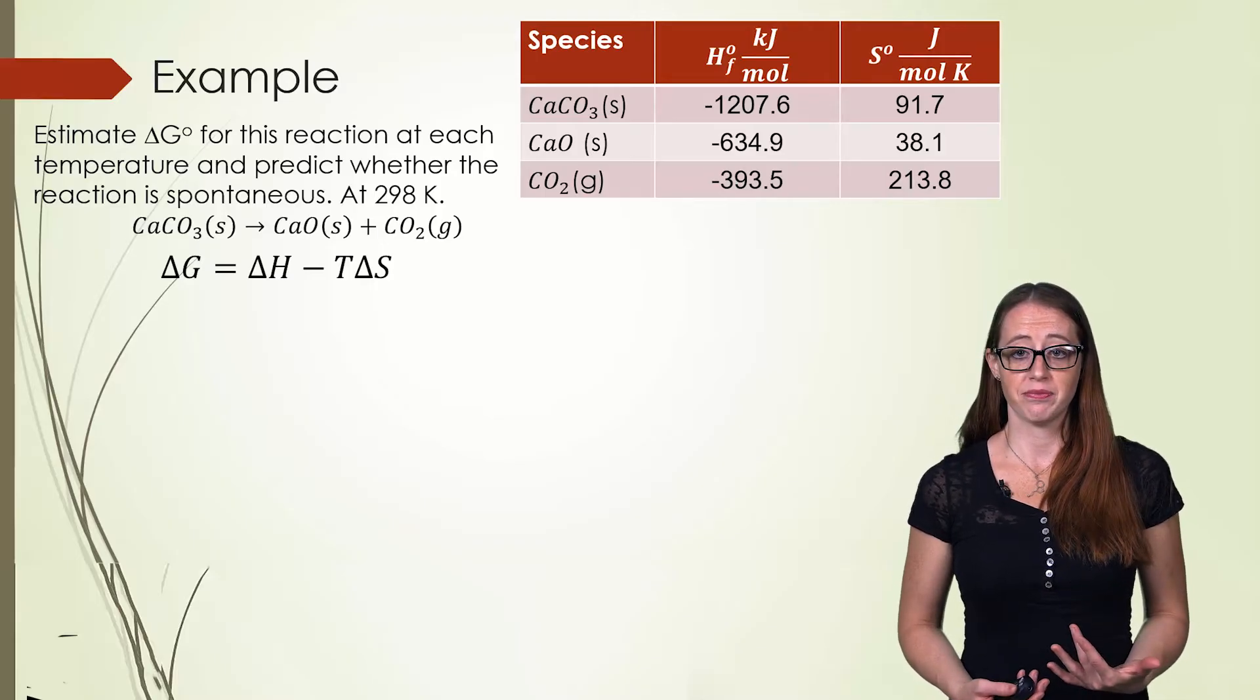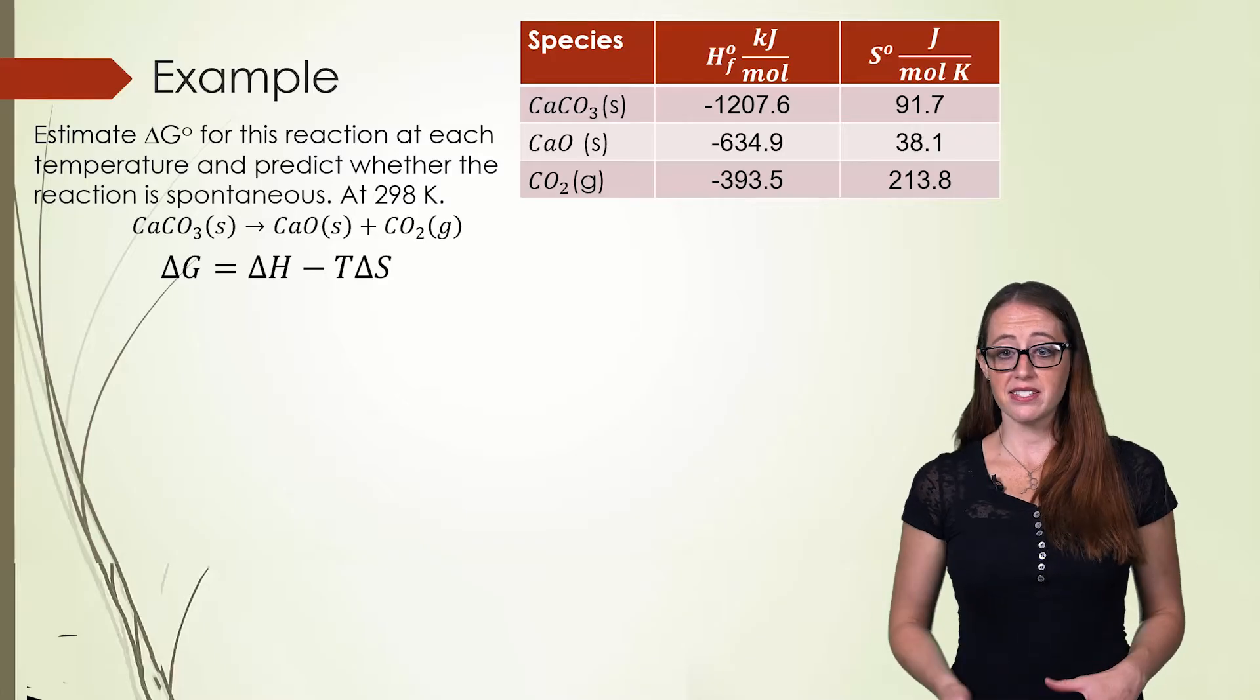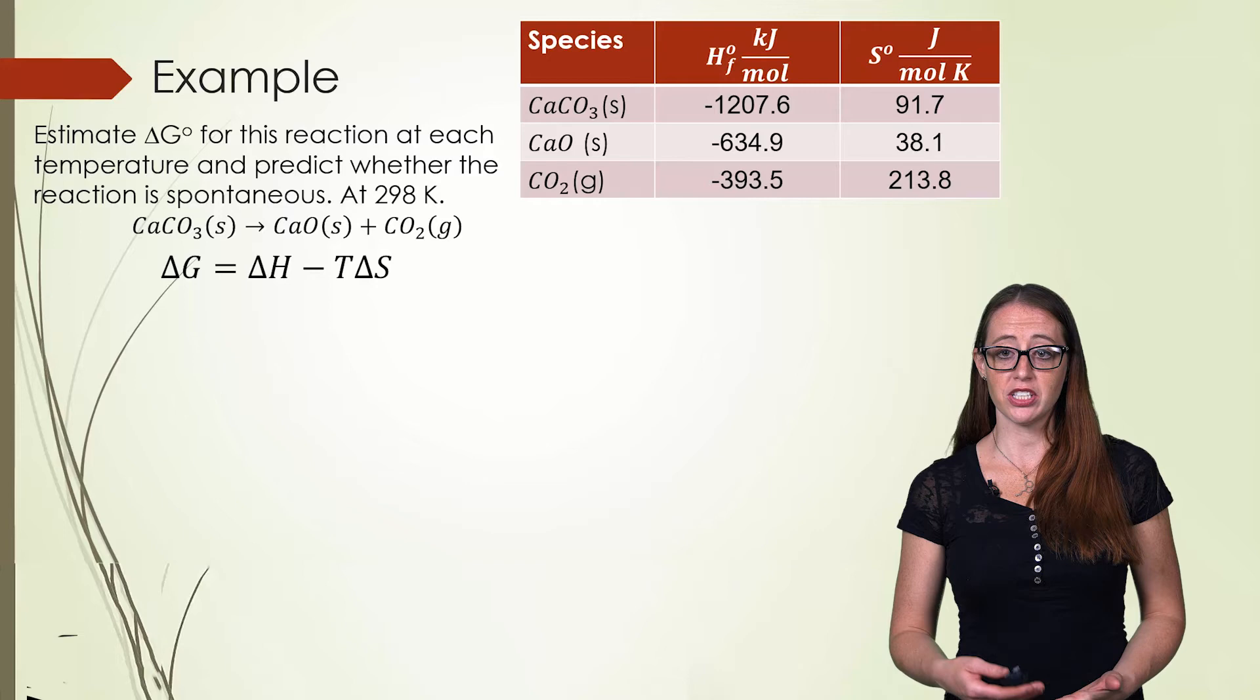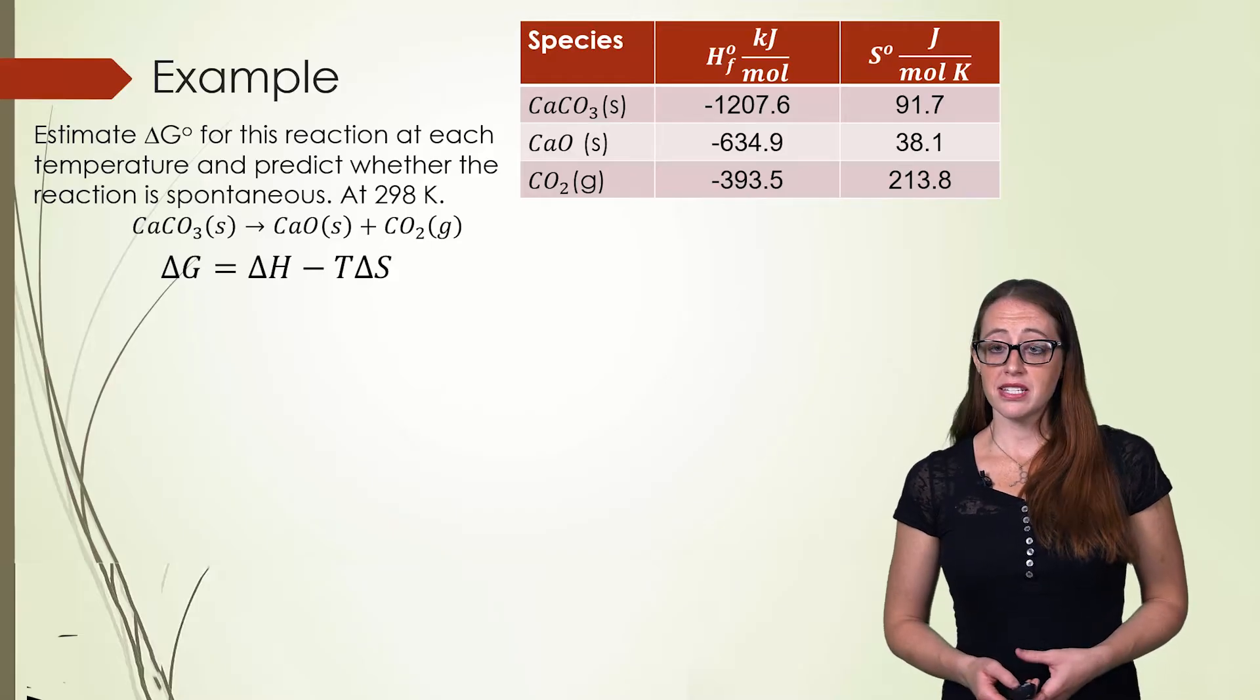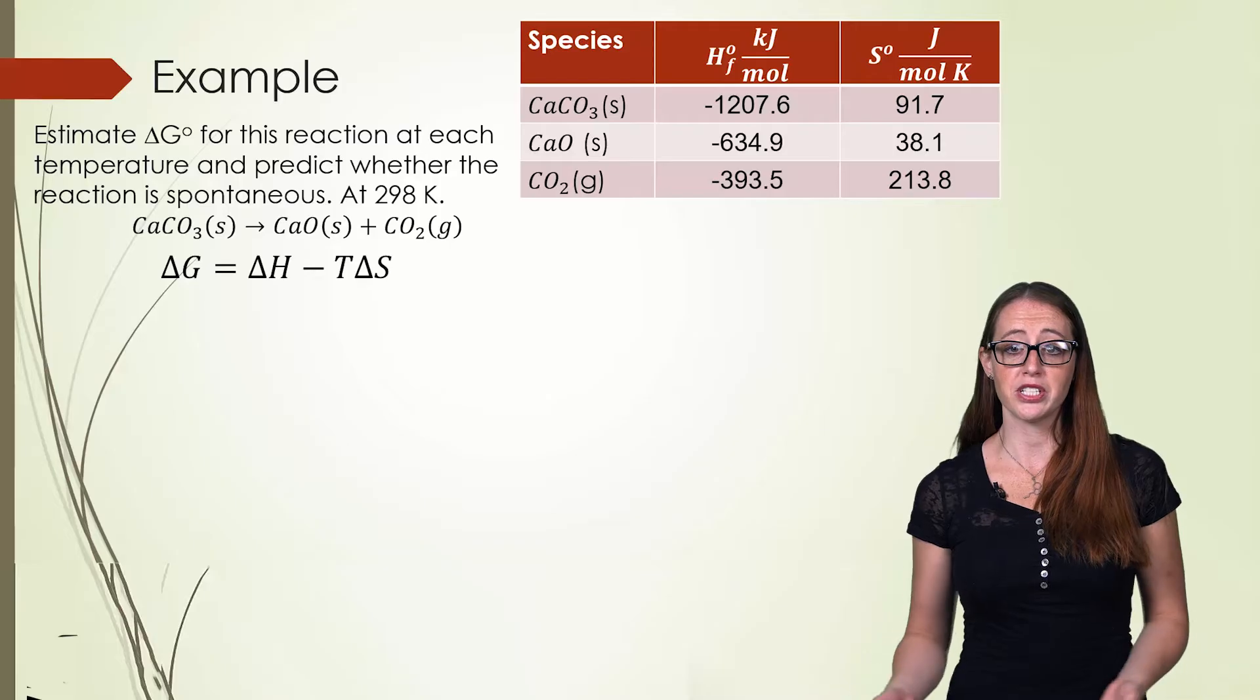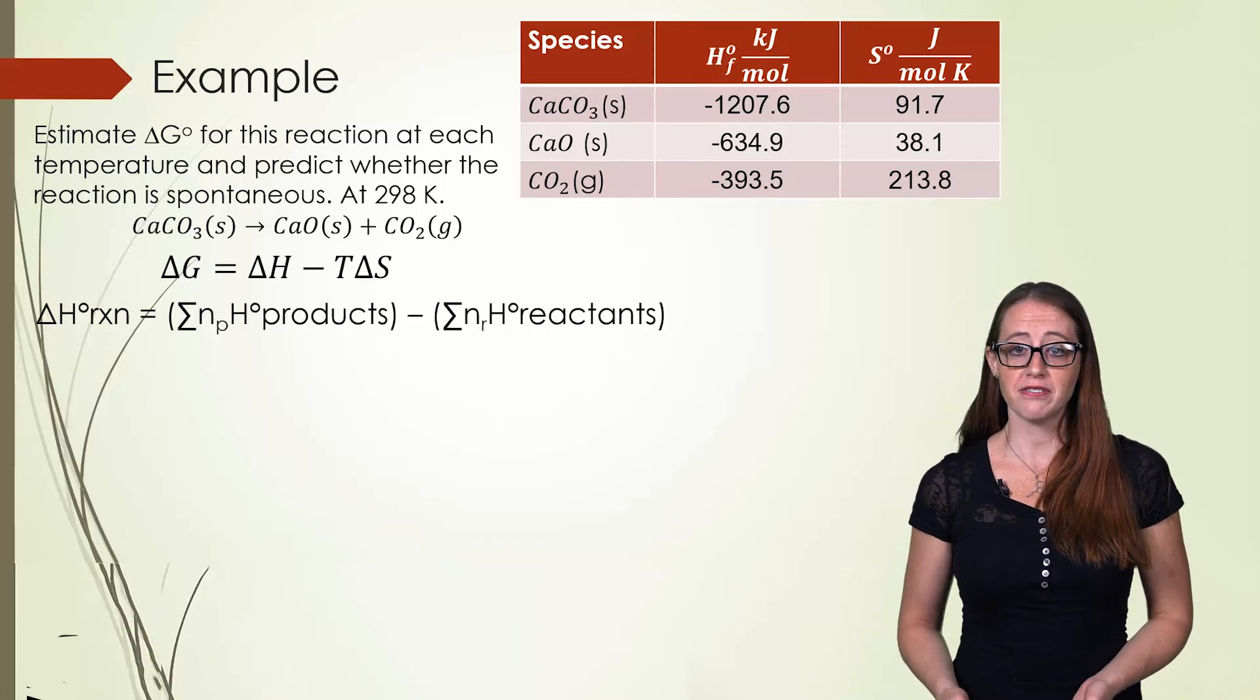Let's start with the ΔH. Calculate the change in entropy before moving on in the video. That's not new to this section, so you should be able to do it from previous parts. So calculate the change in enthalpy and the change in entropy and then come back. So let's start this. The reaction is balanced and it has a one to one to one ratio. So we don't even have to worry about coefficients this time. We just need to fill in.